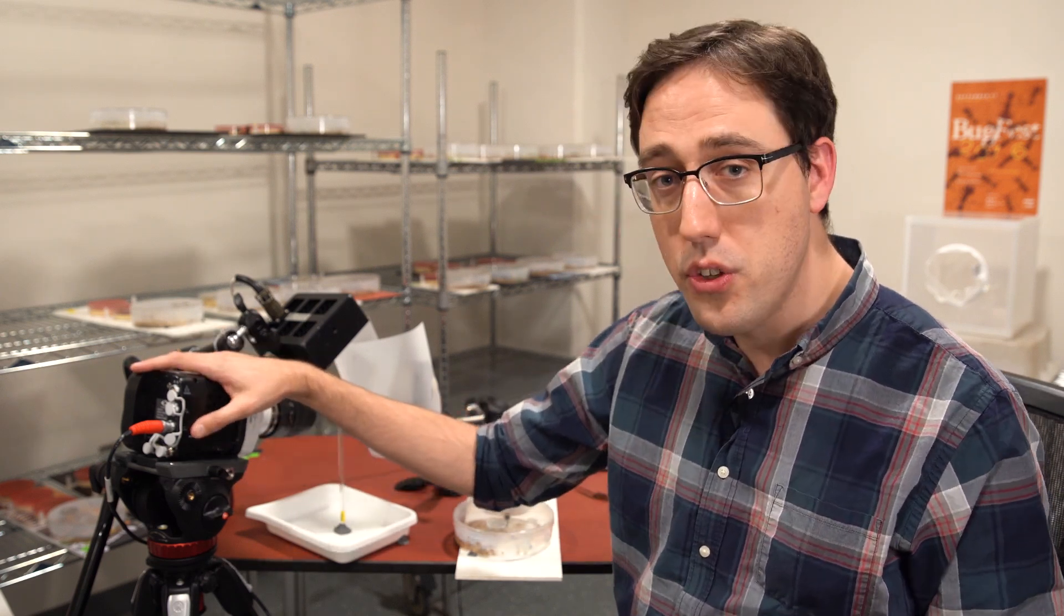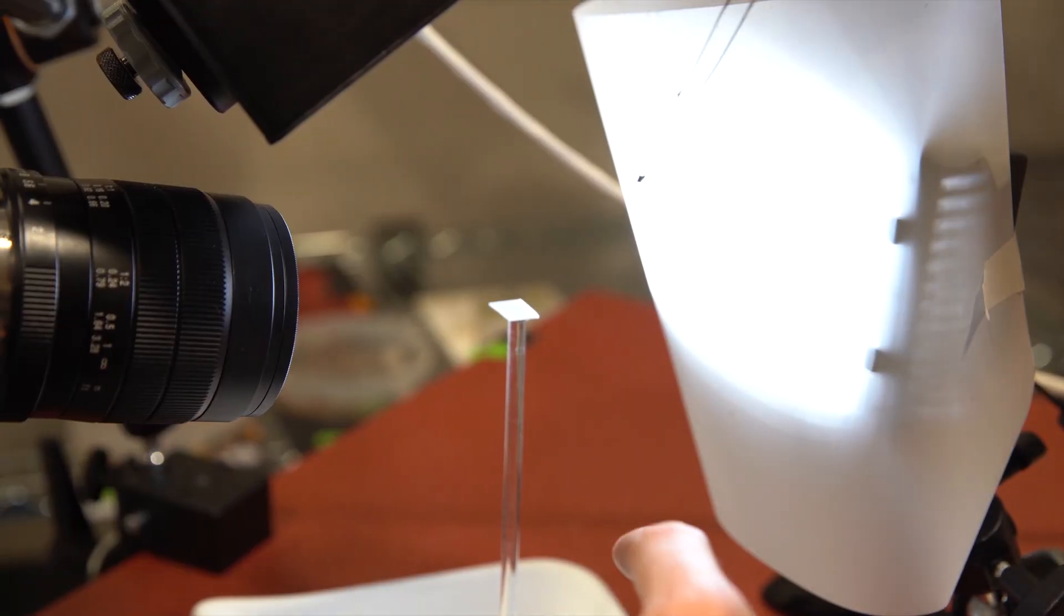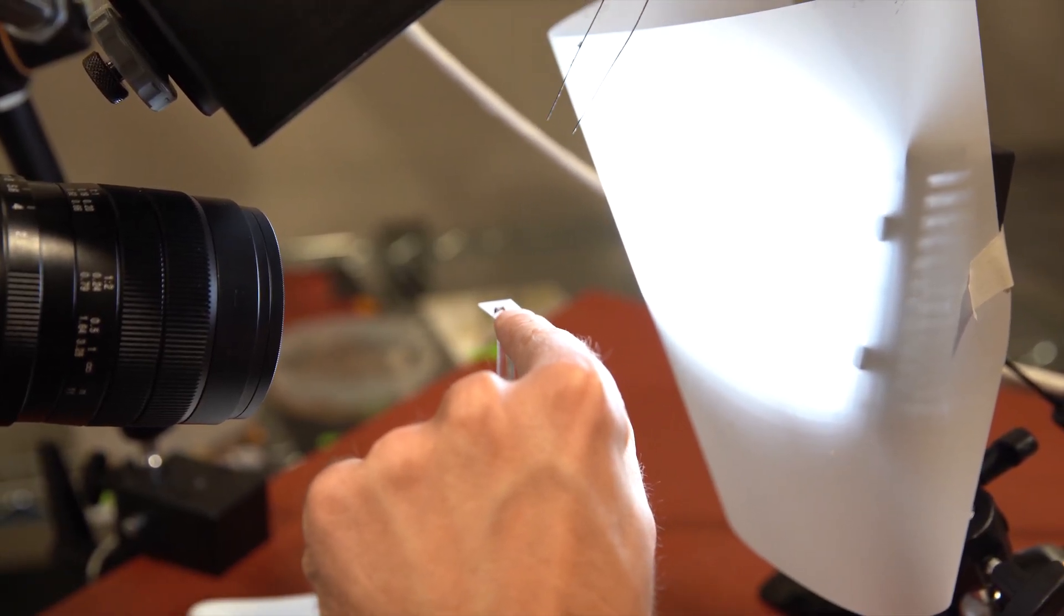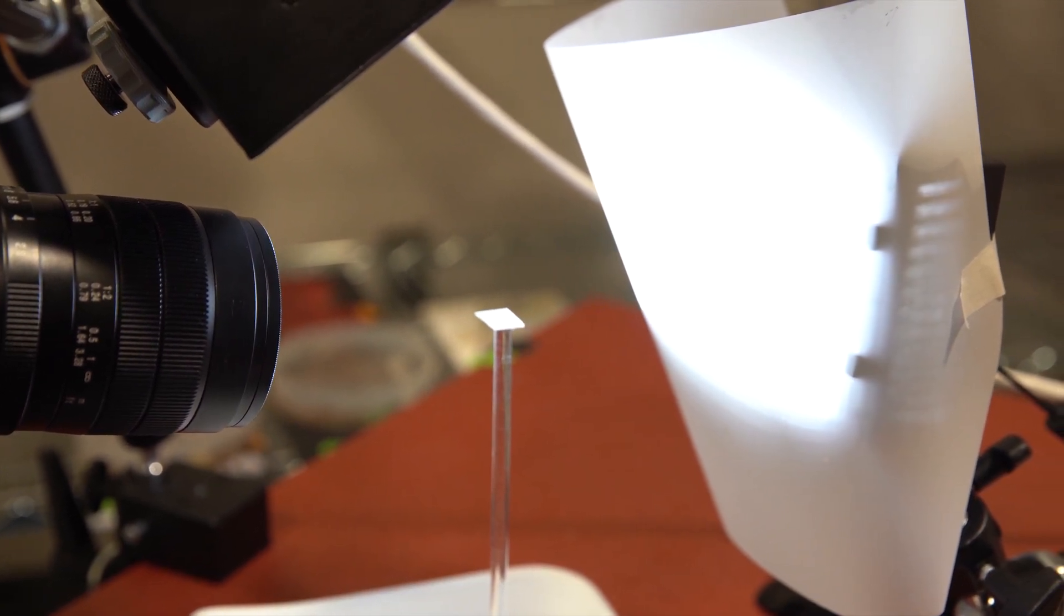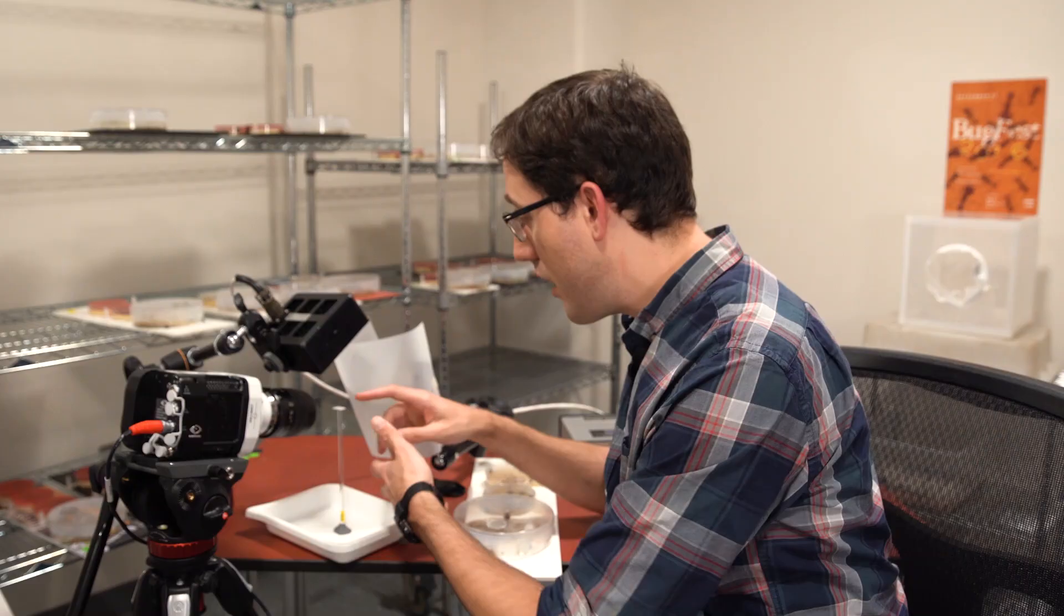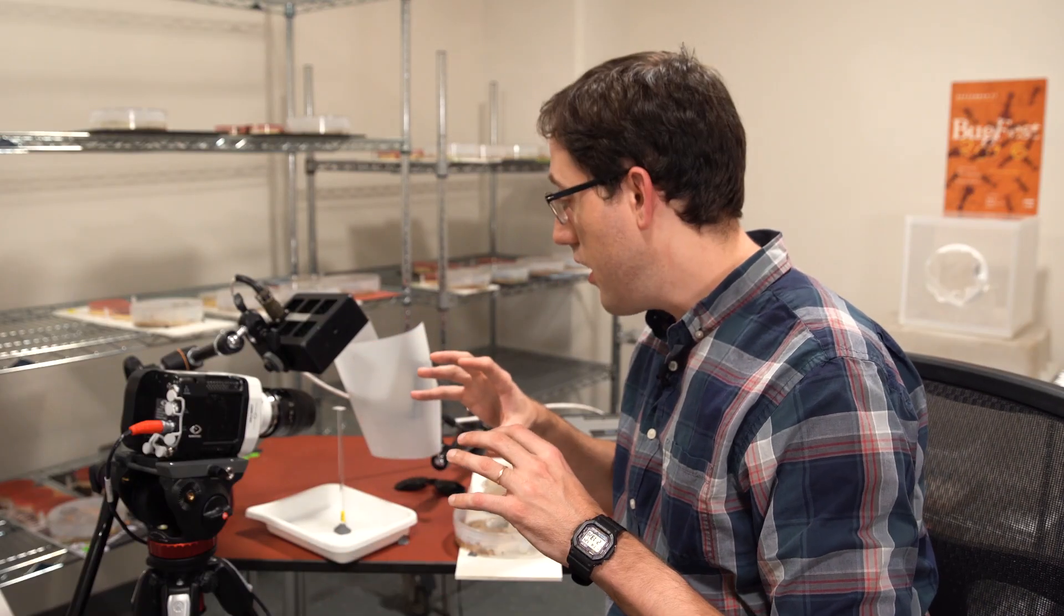We're going to film this up close and in super slow motion. The camera is going to capture at 3200 frames per second, and it's all going to happen here on this tiny little platform. So we're going to put the ant on the platform, so her movement is restricted, and then I'll just set my finger at the end, and hopefully she'll find it and snap.